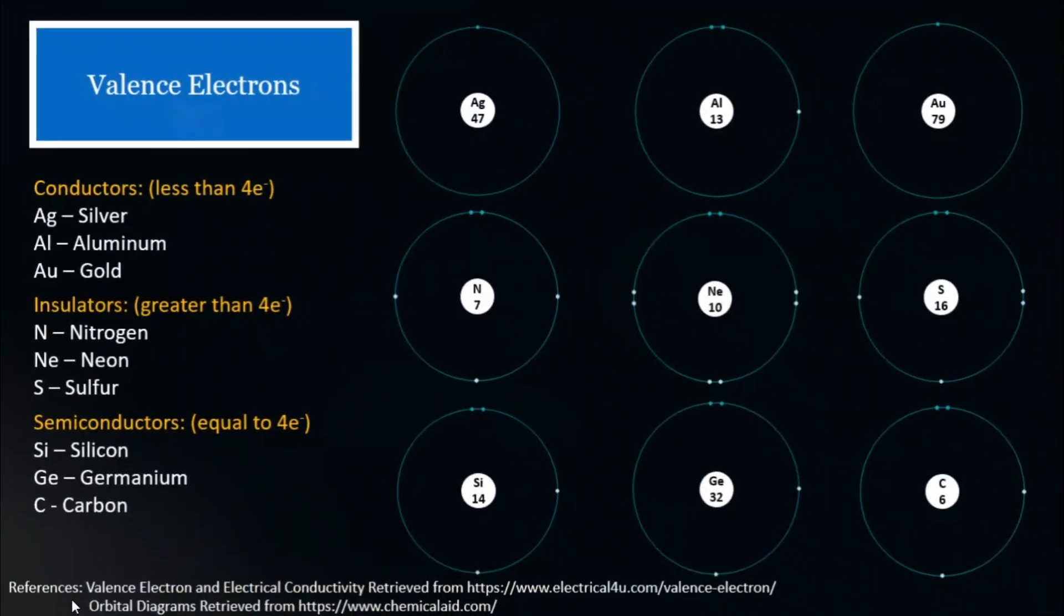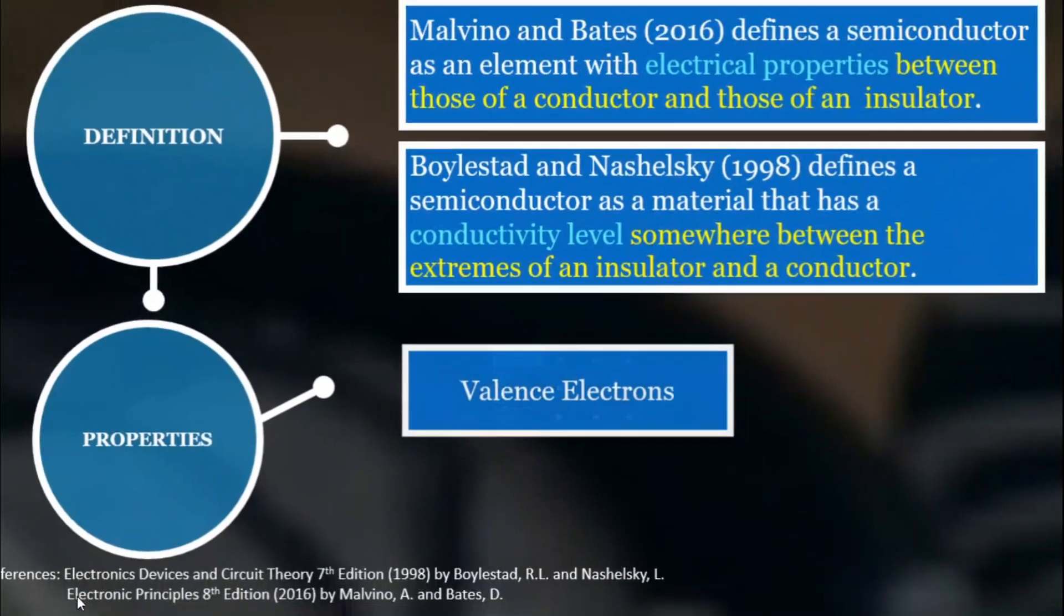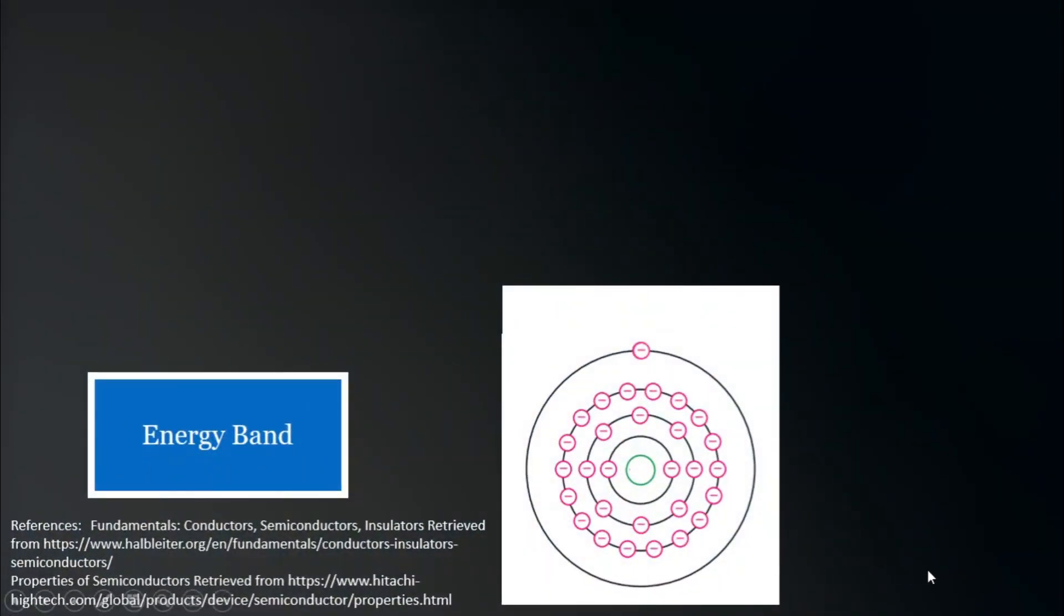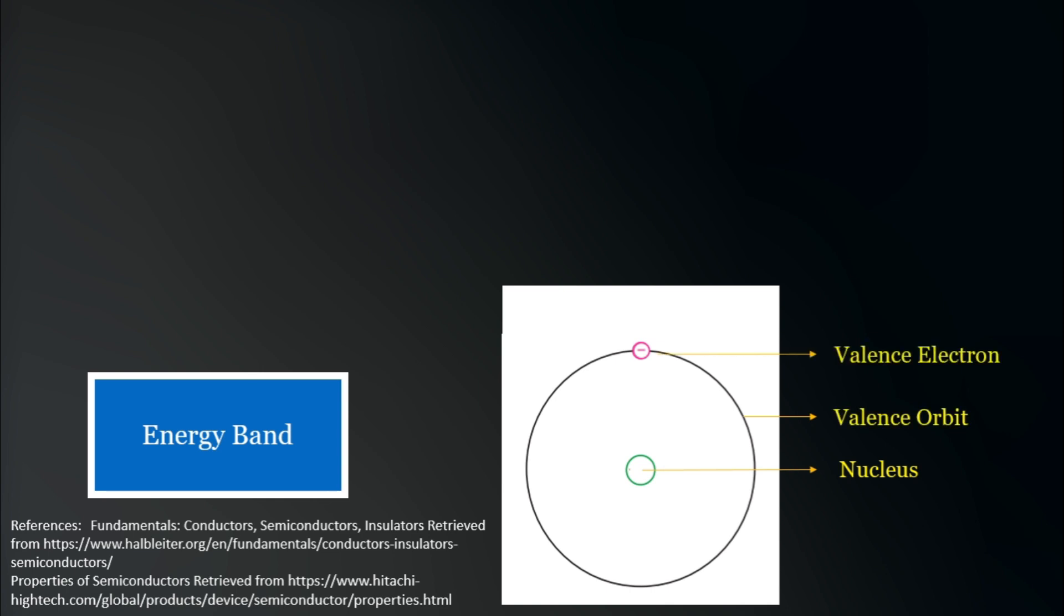The next property of a semiconductor that needs to be explained is the energy band. Before we explain the energy band model, we'll start with something that we are already familiar with. Here, we have the nucleus, the valence orbit, and the valence electron.